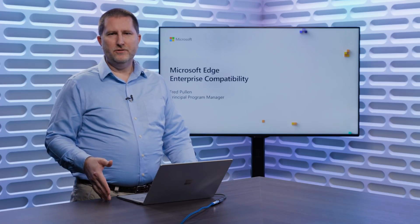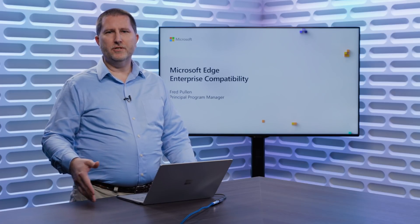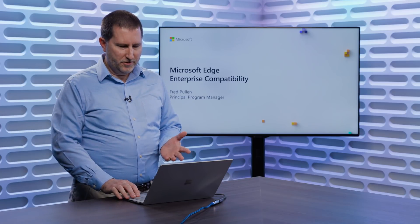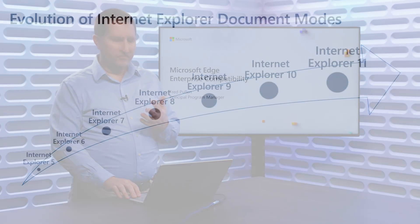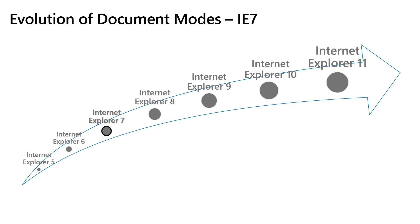Over the years, we had to provide backward compatibility for older versions of Internet Explorer, and this problem has continued to this day. So let's look at some of the older document modes and how this evolved. When we first shipped IE5 and IE6, there weren't really a lot of web standards, so we had some proprietary standards in those versions of the browser. When we shipped Internet Explorer 7, we knew that there were a lot of sites designed for IE5 and IE6, so we carried forward something called IE5 doc mode, or quirks mode.